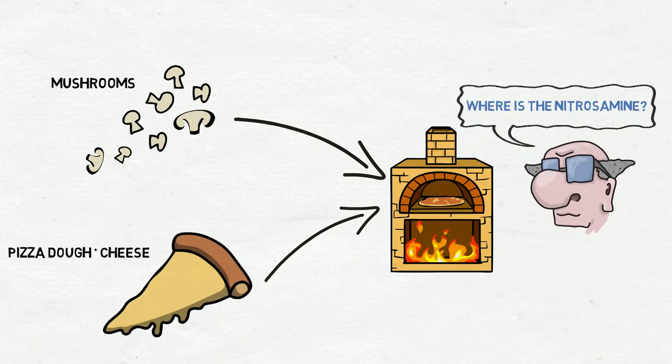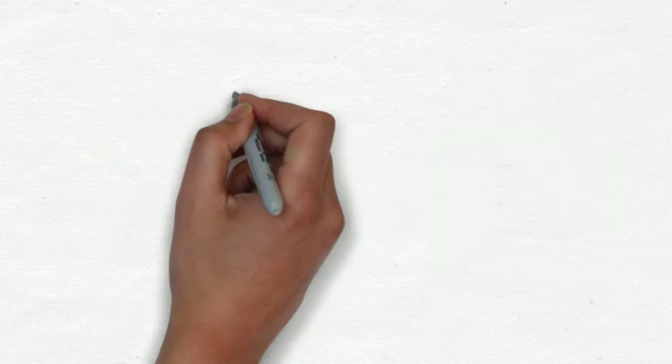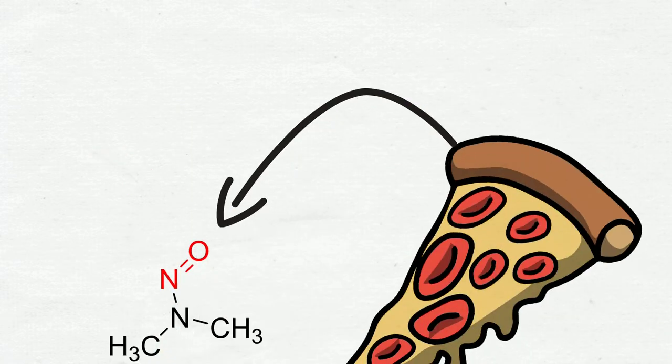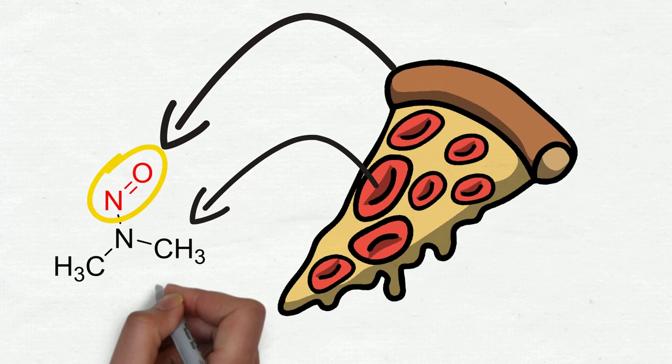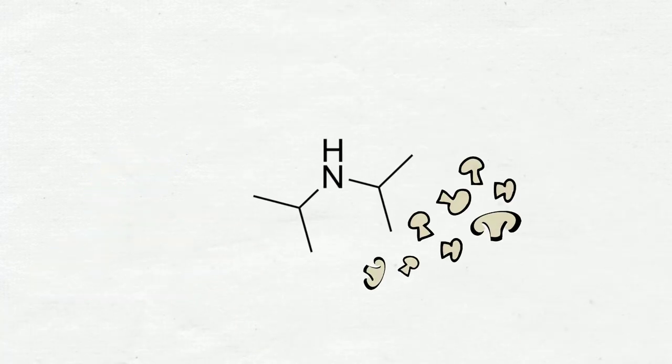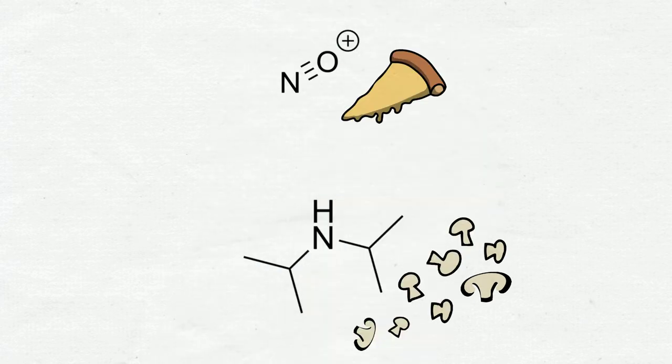But how can I relate this pizza with nitrosamines? Let's think that the base, pizza dough and cheese, corresponds to the N-nitroso bond. Then, imagine the topping is the amine. If I have a different amine, I just have to combine them with the nitroso group.